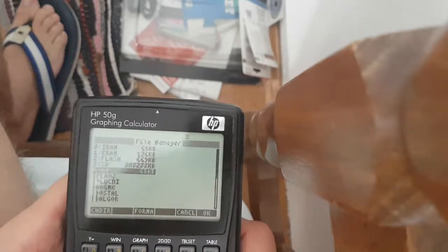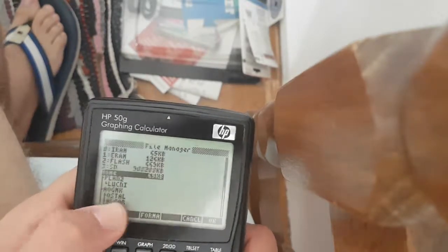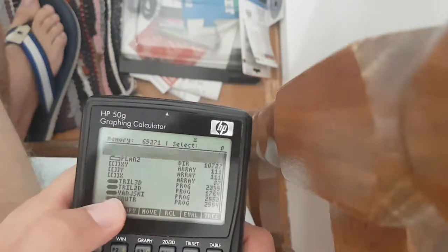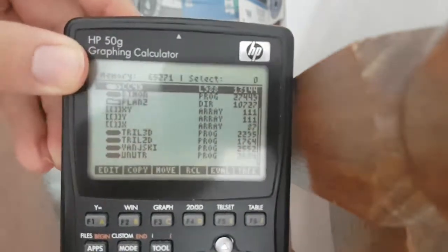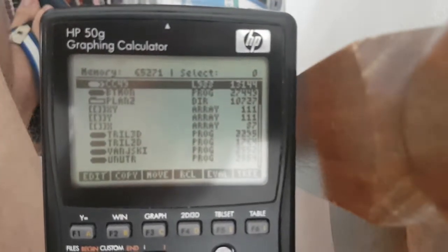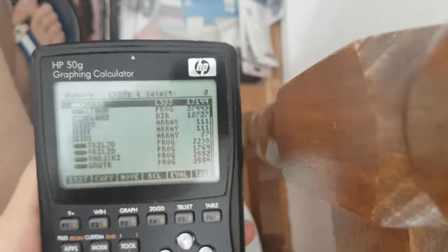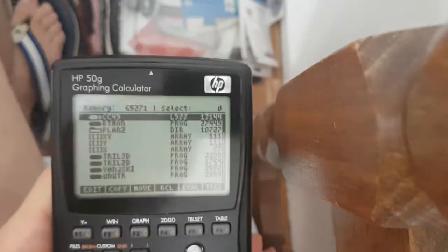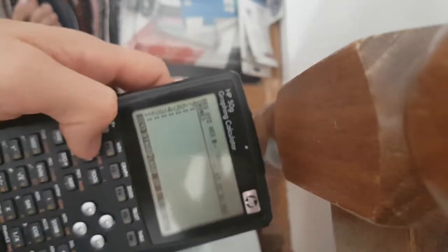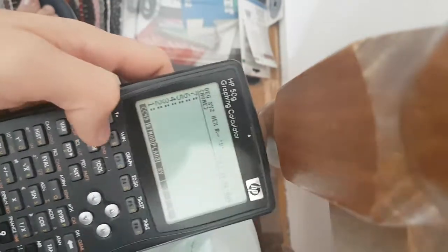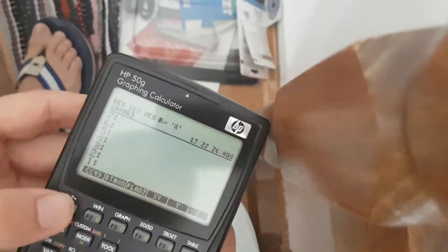You must have the library file in the HP 50G graphing calculator. Like I have this file, if you see, it is the CC 49 library file. So when you have access to your files, just simply put them to the home folder.